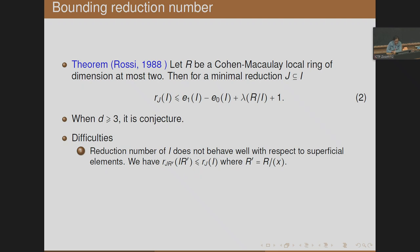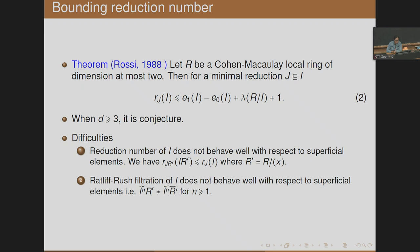The second problem is that the Ratliff-Rush filtration of I does not behave well with respect to superficial elements: the two operations do not commute, meaning Ĩ_n mod xR' is not equal to (I·R')^~_n for all n ≥ 1. If we can handle these two difficulties, then we can prove Rossi's bound.